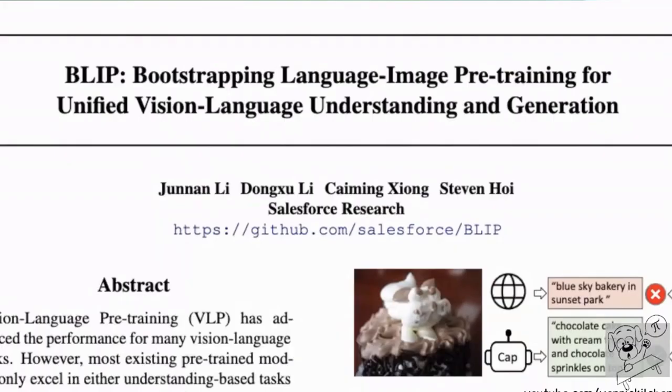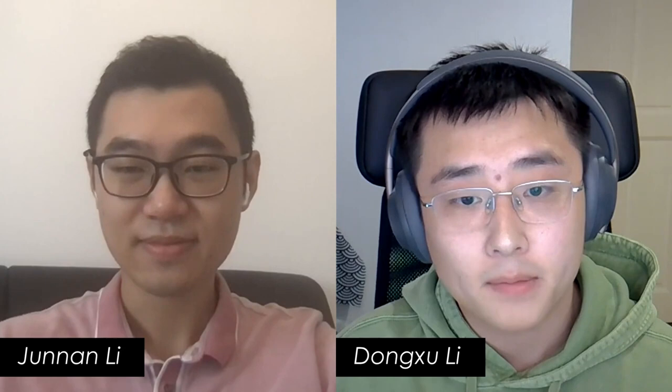Today I'm here with Junnan Li and Dongxu Li, two of the researchers of the BLIP paper. It's a very big honor to have you here. Welcome both of you. This paper was really cool — when it came out, everyone saw it and it generated quite a bit of buzz because it is a new approach to incorporating images and language, and they can do a lot of things at the same time. It is a big system and I was super happy when I read the paper.